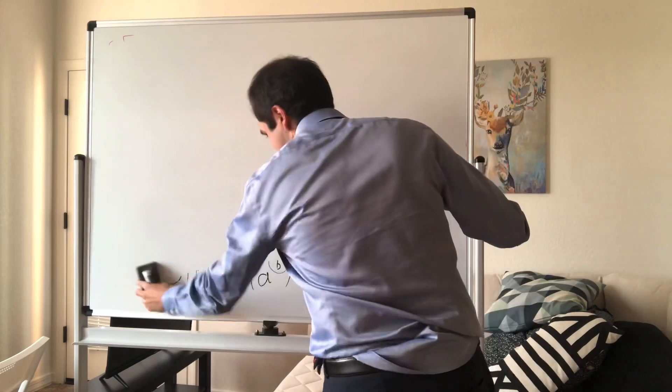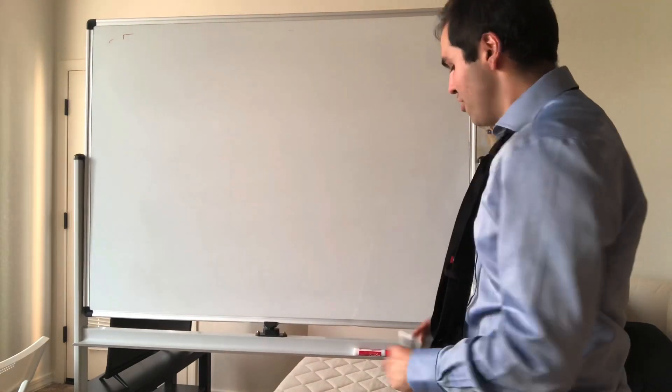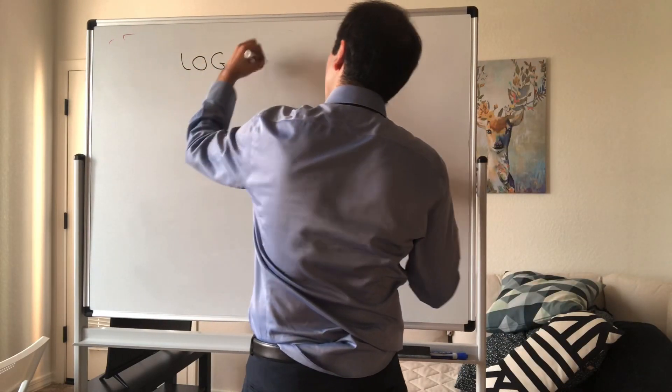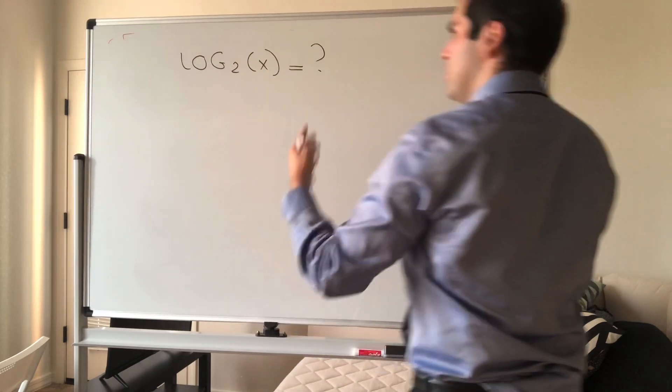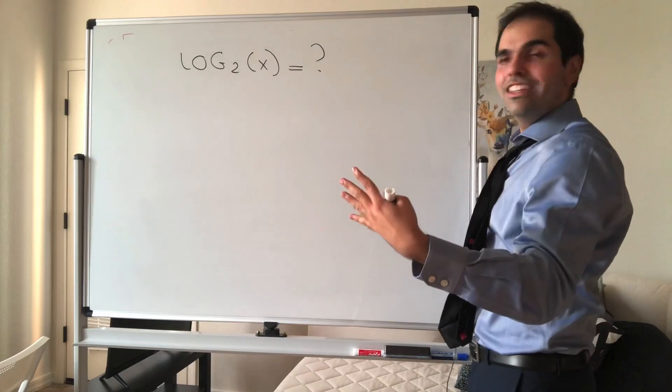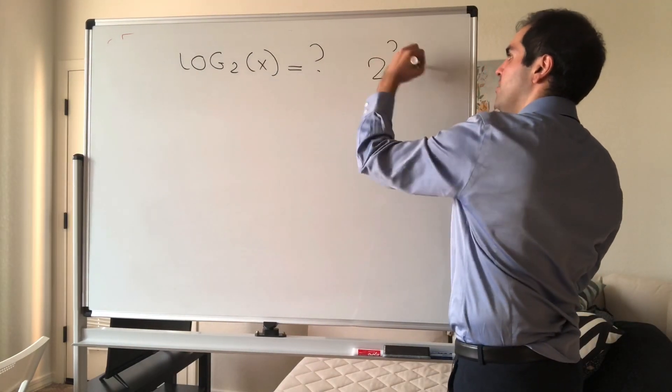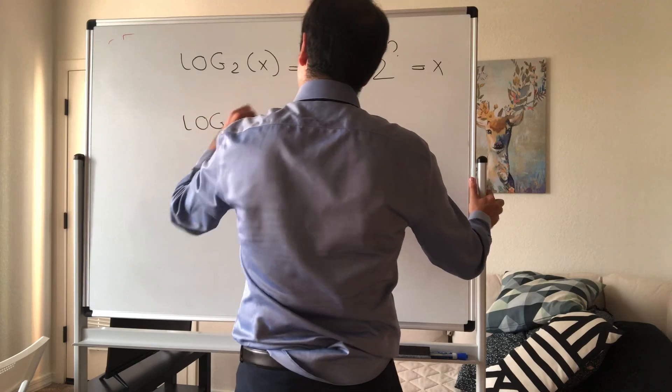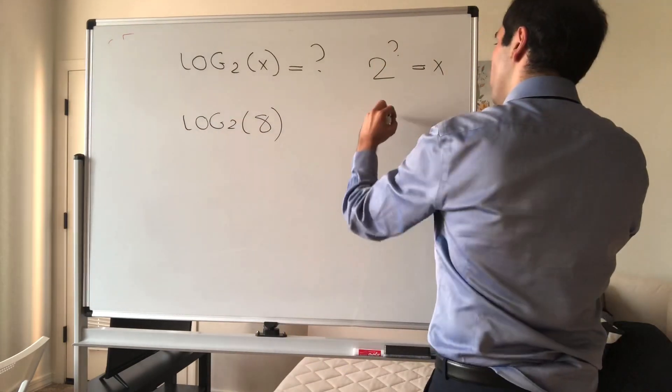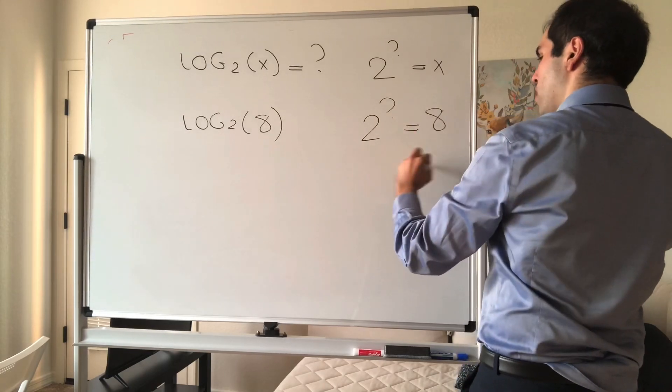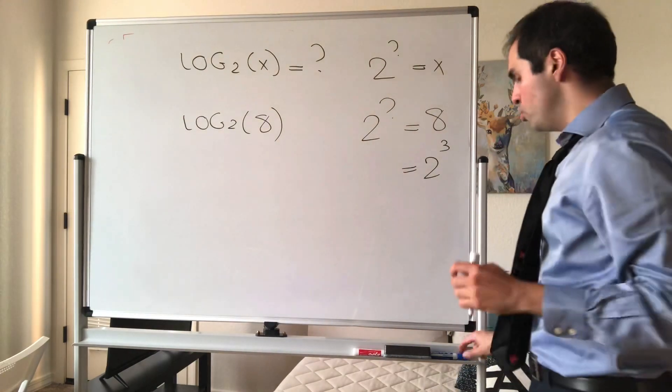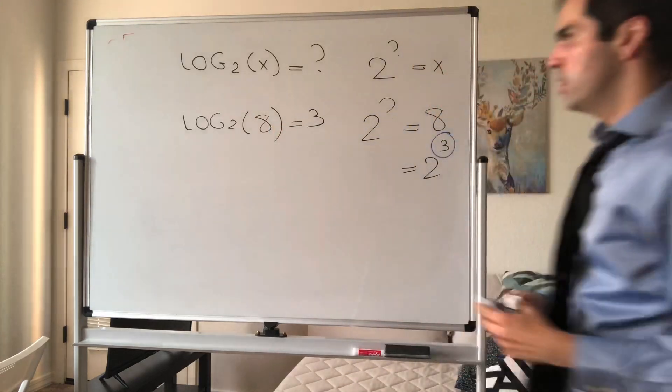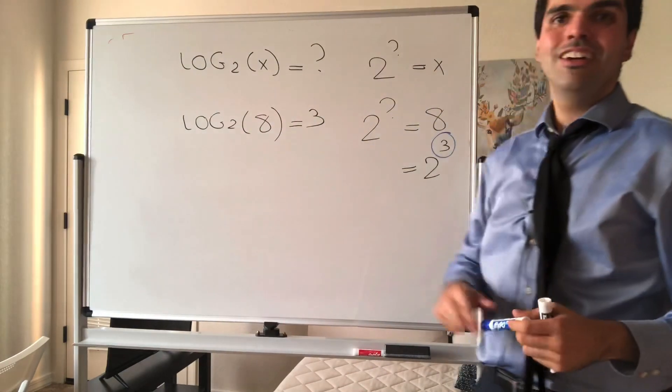Again, it has the same rules. The graph looks basically the same. But let me illustrate log base 2. Log base 2 of x, same thing before we said 10 to the what is x, the only difference is 2 to the what is x. So for instance, what is log base 2 of 8? Well, the question is 2 to the what is 8? 8 is 2 cubed, so the answer is 3.